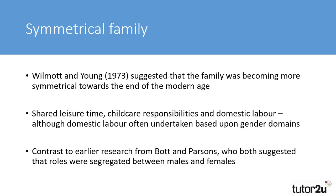One of the first pieces of research to suggest that conjugal roles were becoming more equal was by Wilmot and Young. In their research of the East End of London, they found that the family was becoming more symmetrical towards the end of the modern age. Families would have shared leisure time, childcare responsibilities and domestic labour, although often the housework was based upon gender domains, with males more likely to be involved in home repairs, gardening and taking out the bins.